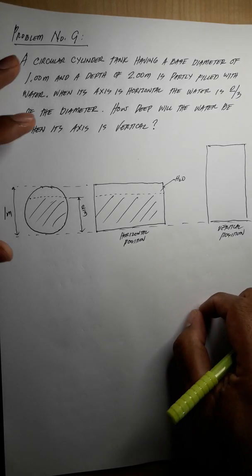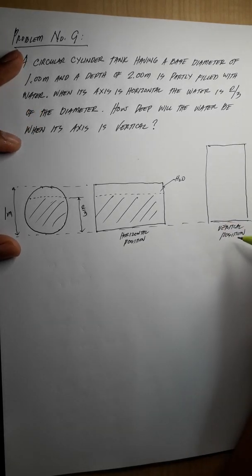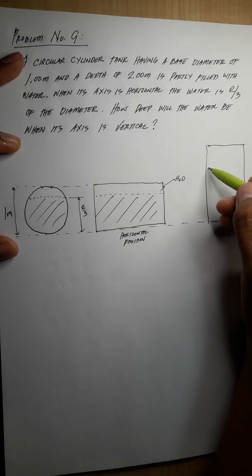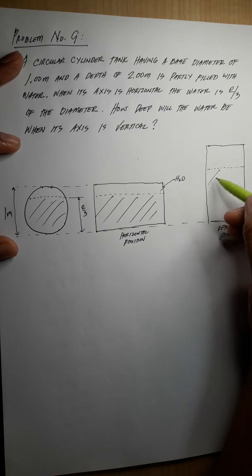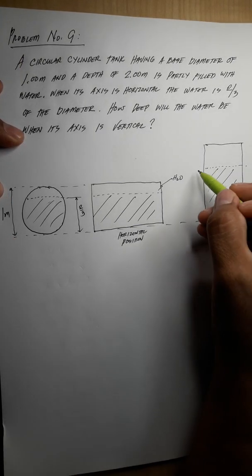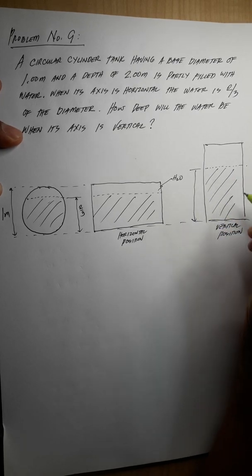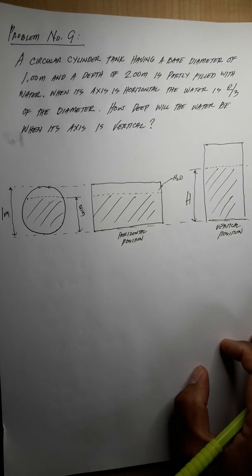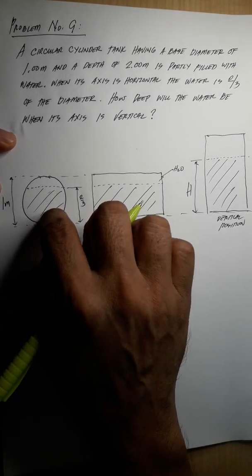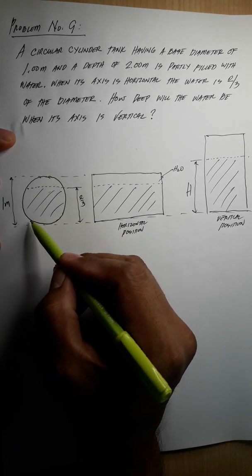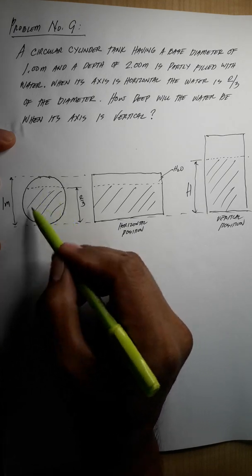Now we are asked to find the level of water inside the cylinder when the cylinder is in vertical position. Let's say we assume the water level is here. This will be our H. First, we focus here because we need to find the area of this portion — the area of the water here in the circle.